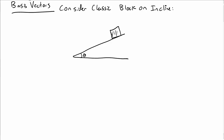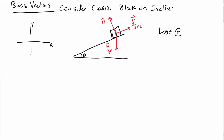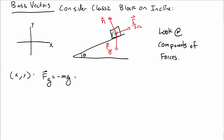I want to talk about the idea of basis vectors. As context, consider the classic block on an incline where there's a force of gravity straight down, a normal force perpendicular to the incline, and a frictional force up the incline. I want to look at the components of the forces in a normal coordinate system with x and y. In the xy coordinate system, the gravitational force F_g is minus mg in the j-hat direction — so it's down in the negative j-hat direction.